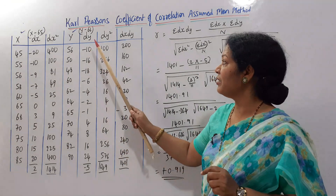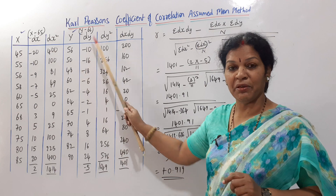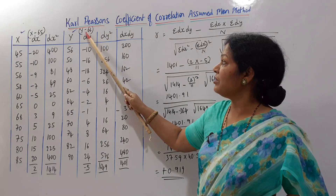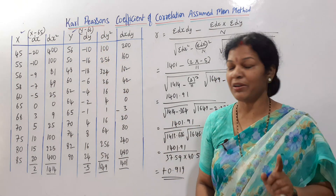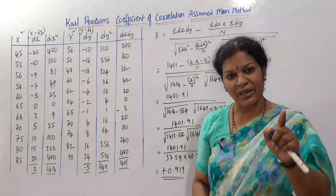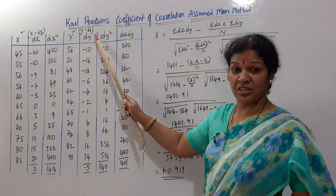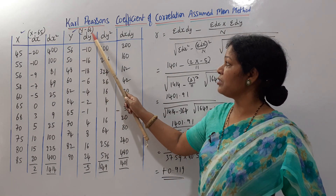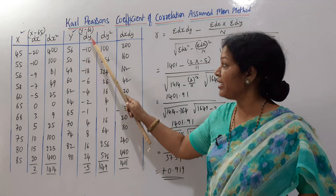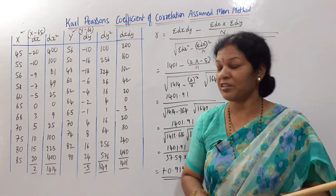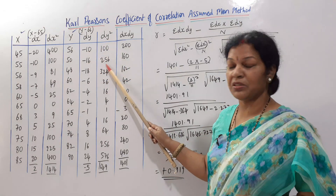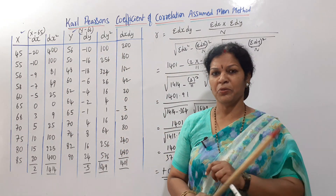For dy, we subtract the assumed mean for y. I assumed 66 — you can assume any number, even one not in the y list. So: 56 minus 66 gives minus 10, 50 minus 66 gives minus 16, 48 minus 66 gives minus 18, and so on. Then we square each dy to get dy-squared: minus 10 times minus 10 equals 100, and so forth.